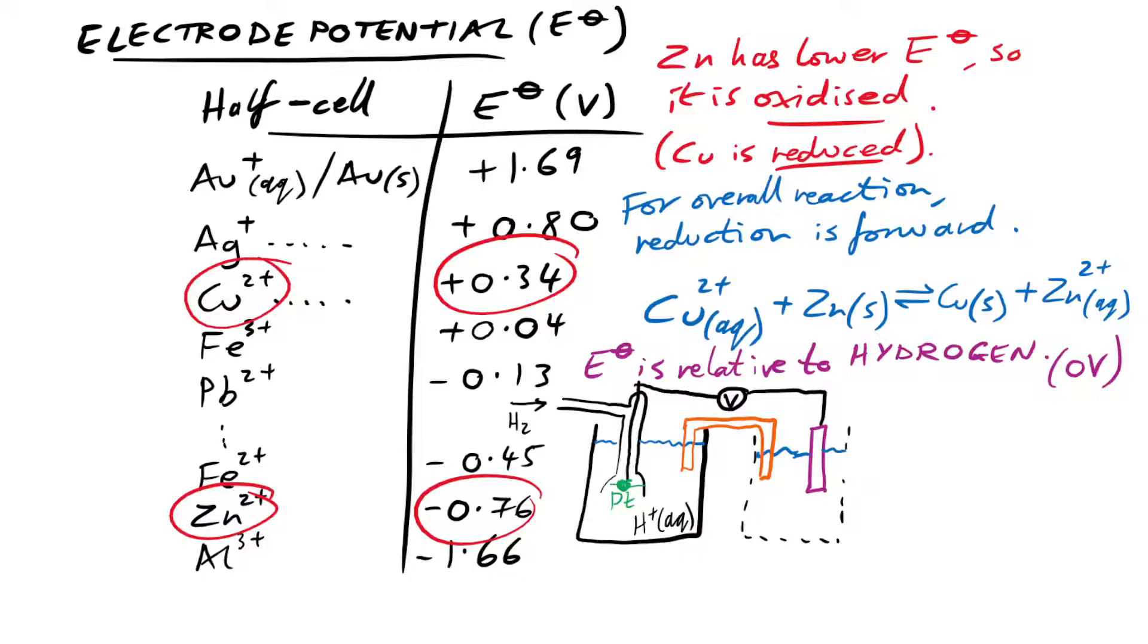So that means hydrogen is going to be that zero and then everything else is plus so many volts or minus so many volts relative to that. And because the conditions can change how a reaction occurs, then we need to make sure that our solutions are one mole per decimeter cubed, and it happens at RTP as well. So 298 Kelvin and 100 kilopascals or one atmosphere.